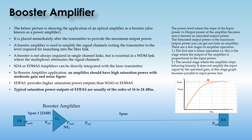This is the graph between input and output power. This point is the saturation point, where the graph of output power becomes parallel to the input power axis. In this diagram there are two stages.